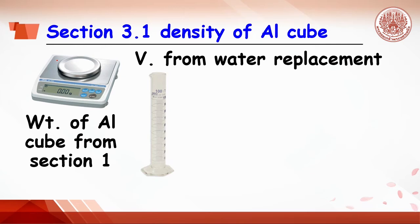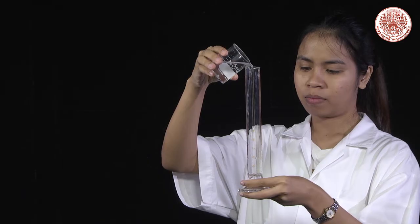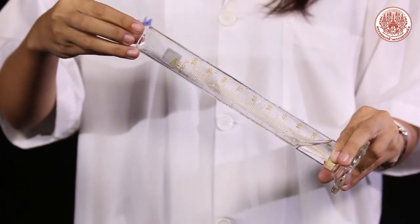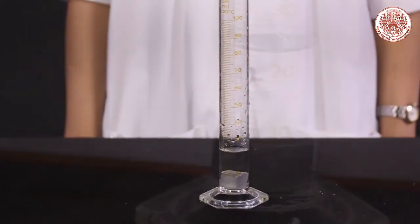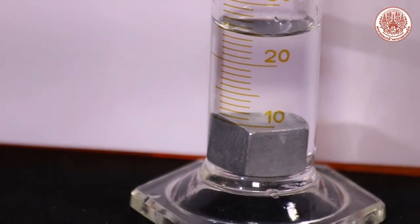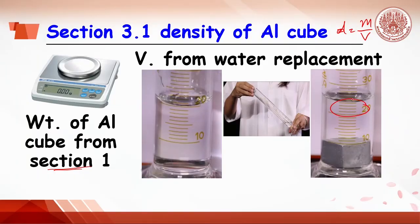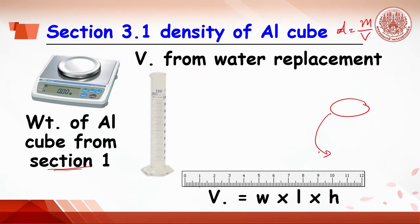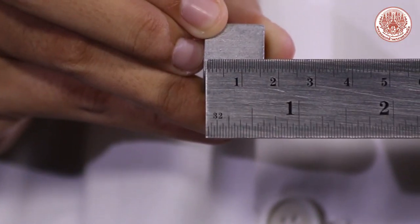Section 3.1: Density of the cube. Density equals mass divided by volume. The mass of the aluminum cube comes from Section 1. The volume can be determined by water displacement: fill 20 mL of tap water in a 100 mL cylinder, then put the aluminum cube in the cylinder, read and record the exact volume. The difference in water volume is the volume of the cube. Since the cube is a geometric shape, volume can also be calculated from width, length, and height.